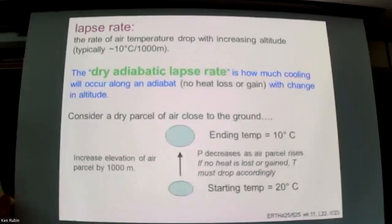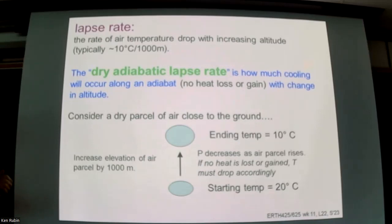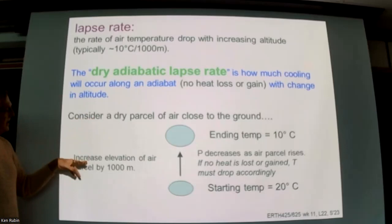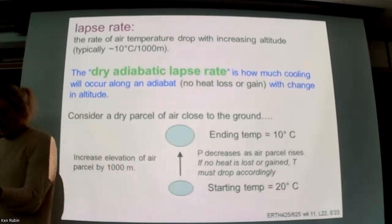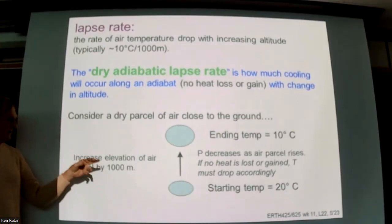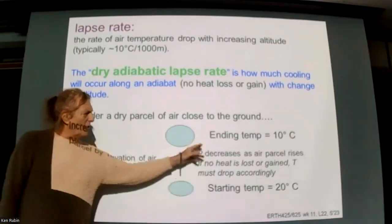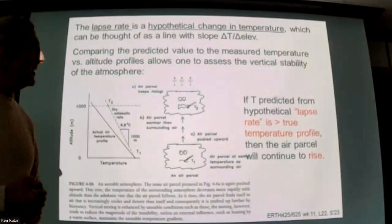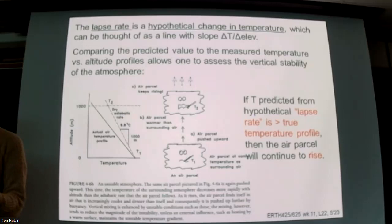A typical dry lapse rate for raising a parcel by a kilometer is about 10 degrees Celsius. Most people have experienced this going up in elevation — you can go from sea level to a few thousand feet and feel about a five to ten degree temperature difference. That's the lapse rate. You can take weather balloons and measure the actual temperature structure in the atmosphere, which tells you the actual lapse rate.